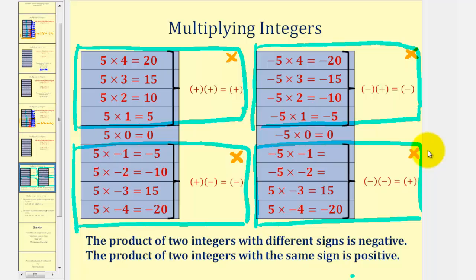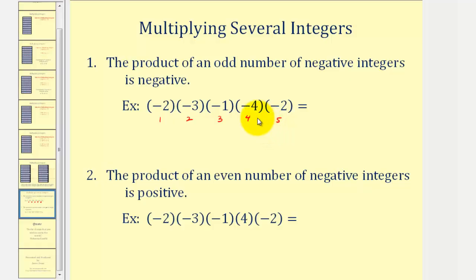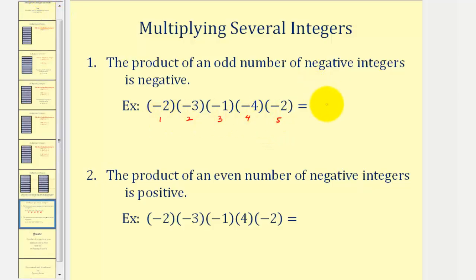There is one more thing to mention. When multiplying several integers at a time, we can determine the sign two factors at a time, or use these rules: the product of an odd number of negative integers is negative. In this first example, we have a product of five negatives, and since five is odd, this product will be negative. Once we know the sign, we ignore the signs and find the product of their absolute values: two times three is six, times one is six, times four is 24, times two is 48. So this product is negative 48.